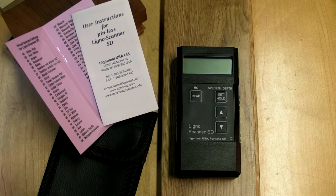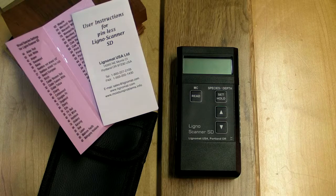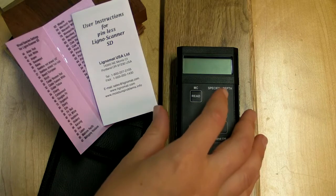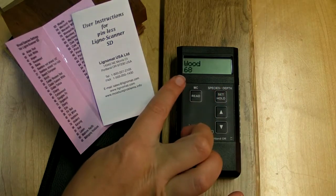First, check the species setting for the wood you are measuring. For example, white oak has setting number 68. Press the Set key. The setting number appears on the left side of the display.